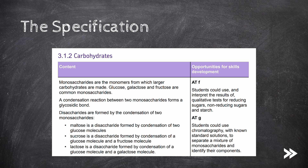First, we should know about monosaccharides, which are the monomers from which larger carbohydrate polymers are made. Most carbohydrates are polymers, and we should know the most common monosaccharides. We should know about the condensation reaction between two monosaccharides and the formation of disaccharides, as well as the names of different disaccharides and the monosaccharides which they are made of.